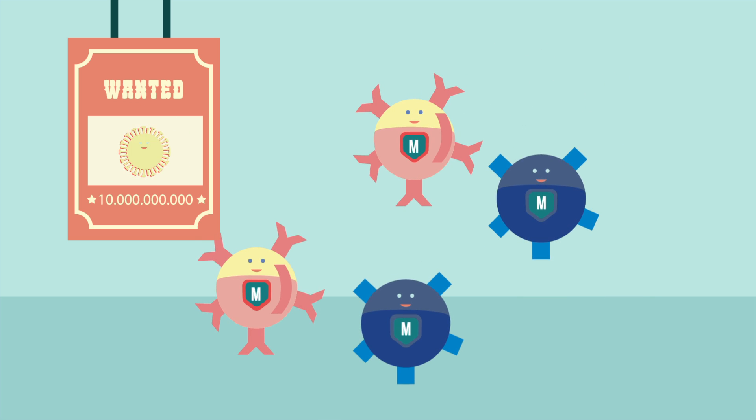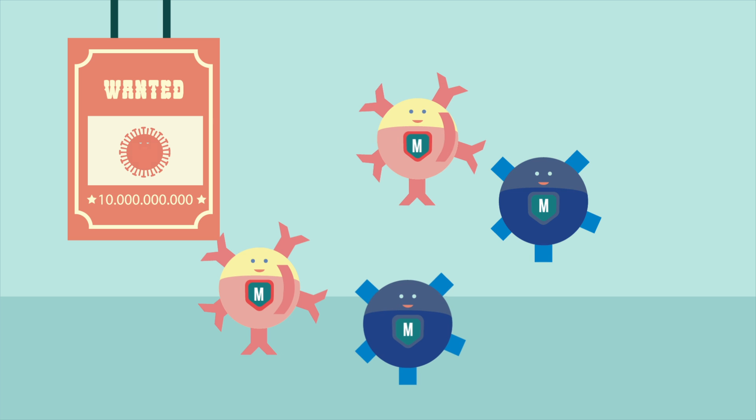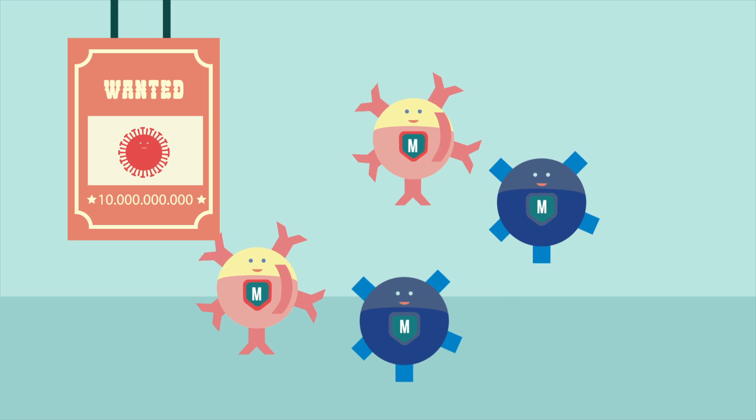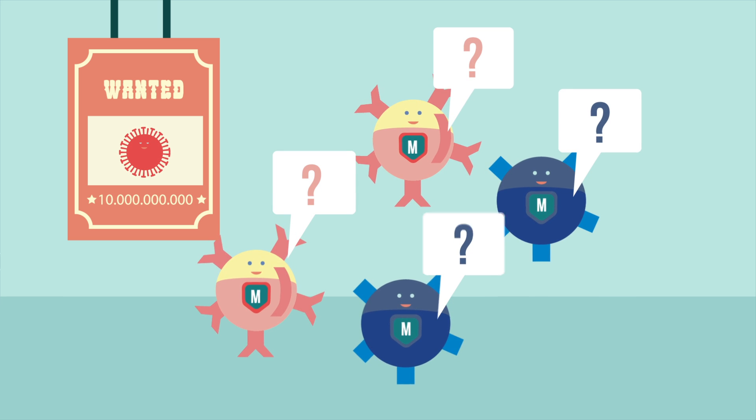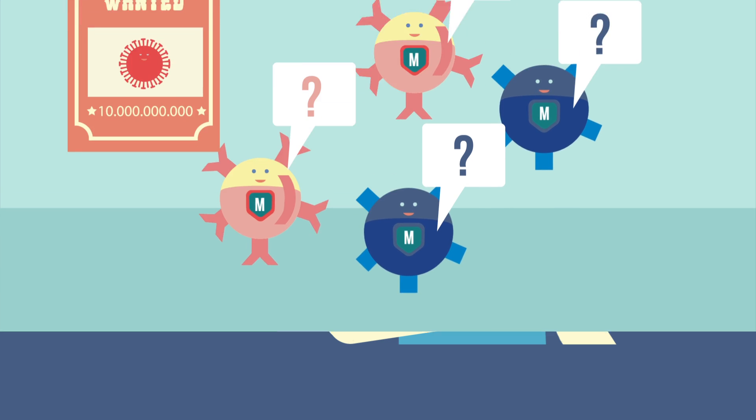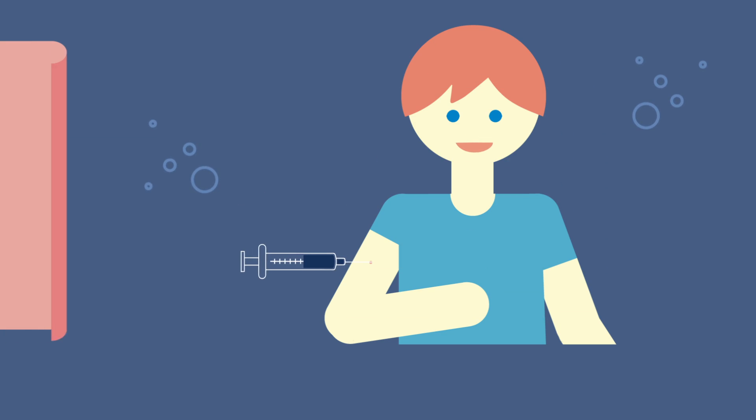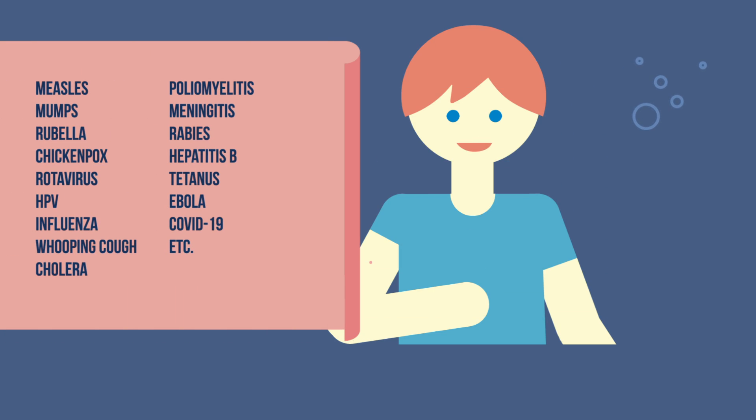Some pathogens, such as influenza viruses, are very diverse. Thus, memory cells cannot provide lasting protection against them. Vaccines provide efficient protection against several diseases that could otherwise lead to severe illness or even death.